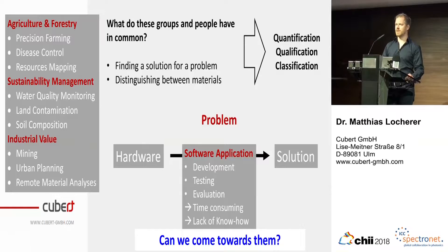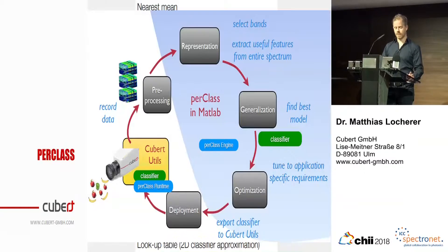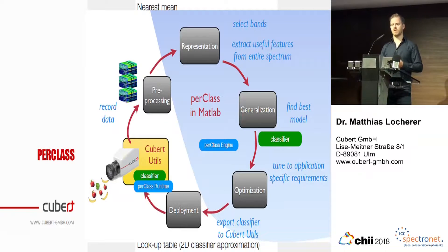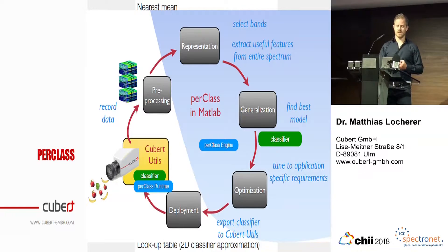Pawel Patzlik already introduced yesterday the MIRA interface, which is based on PerClass. PerClass is a classification tool based on machine learning and it involves state-of-the-art classifiers that can be arranged in a cascaded system. We are able to include this in our software environment. This allows the user to first record spectral images with our software, take those images to the PerClass environment and create a statistical classifier for specific materials, and then apply this classifier as a plugin in our software environment. And this is all possible within five minutes.